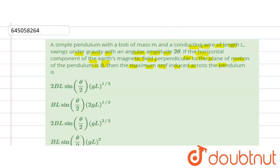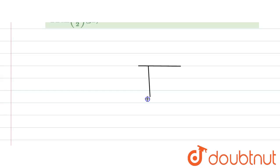So here we have to find the maximum induced EMF across the pendulum. First, we can see this is a simple pendulum. Here the length is L and the bob mass is m. At any angle theta, this angle is theta and the bob mass is here. Now this length is L cos theta.